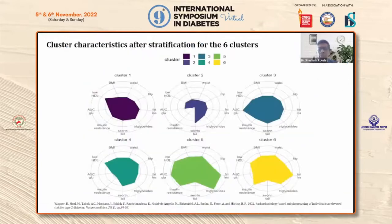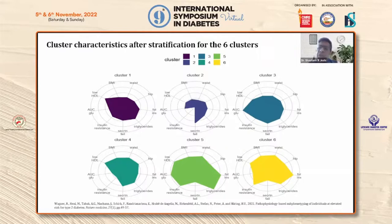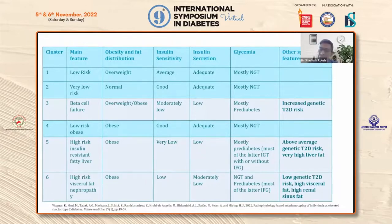Type 2 diabetes comes in clusters based on BMI, waist, hip, fat, insulin resistance, triglycerides, beta cell function, area under the curve, and HDL. There is a lot of heterogeneity in type 2 diabetes. Some clusters are overweight with normal insulin sensitivity and low risk. Cluster 2 has good insulin sensitivity and adequate beta cell mass. Cluster 3 has beta cell failure with moderately low insulin sensitivity, leading to pre-diabetes and increased susceptibility to various abnormalities.